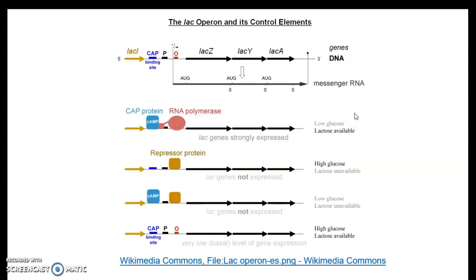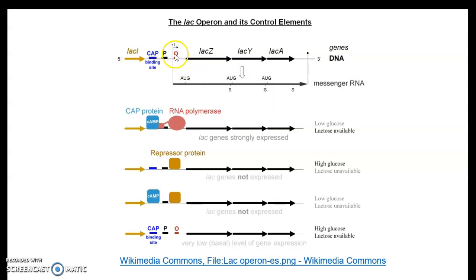Looking at the various conditions under which the lac operon is regulated: the lacZYA genes produce a single mRNA with three initiator codons for translation, leading to beta-galactosidase, permease, and transacetylase. The key regulatory elements are the operator region where the repressor binds, the promoter where RNA polymerase binds, the CAP binding site, and the lacI gene for repressor synthesis.